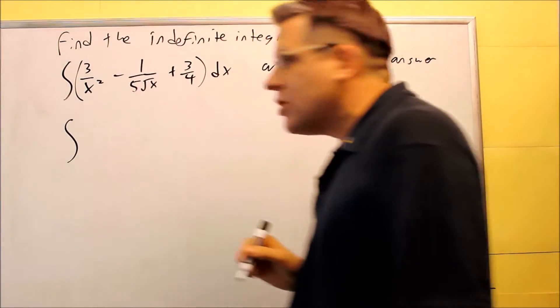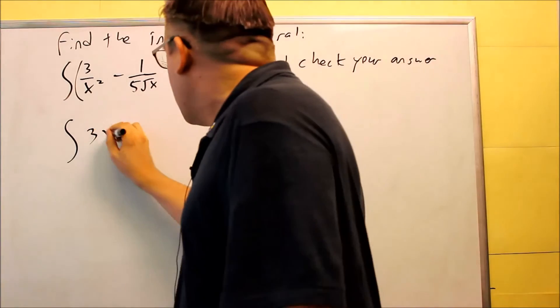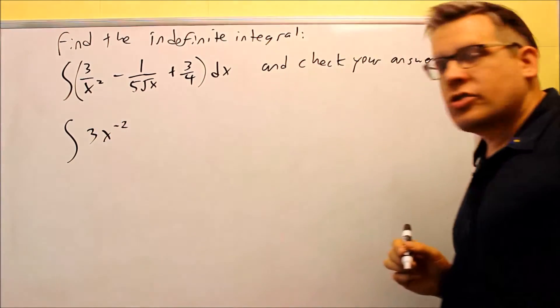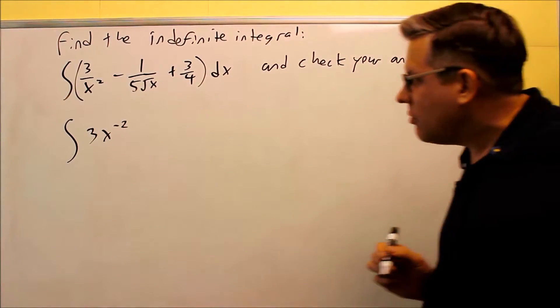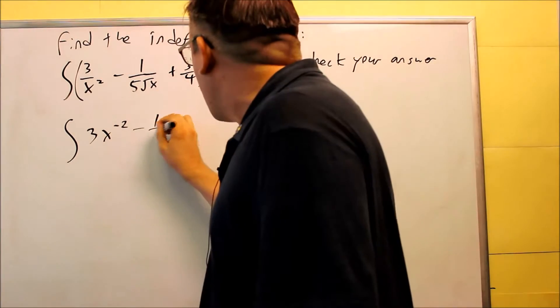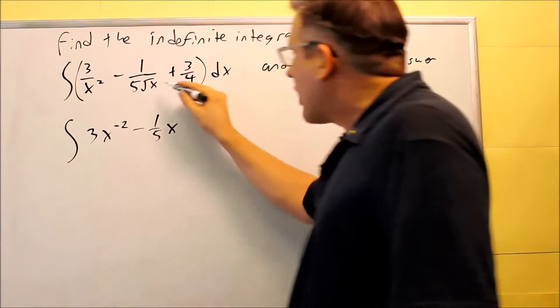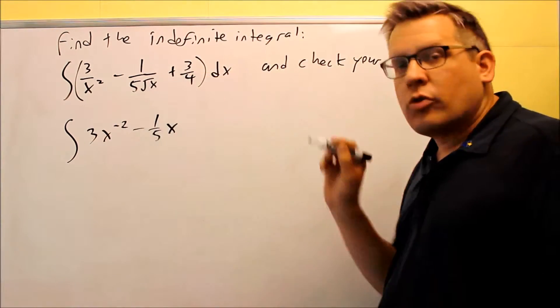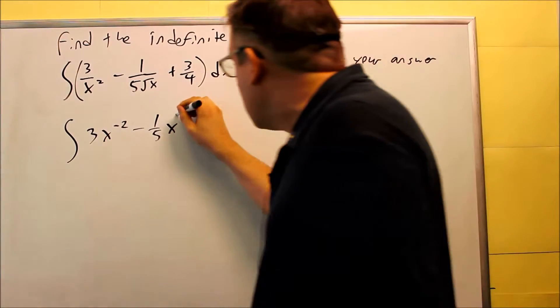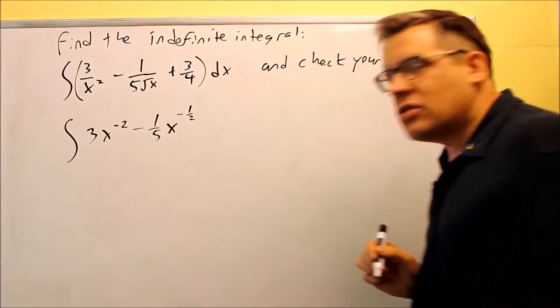So we're going to first just change this. I'm going to turn this into negative exponents. So that one's going to turn into 3x to negative 2. Now this one, I have a minus 1 fifth. Now the x, it's on the bottom, and the square root we know is 1 half power. So I can write this as x to negative 1 half.